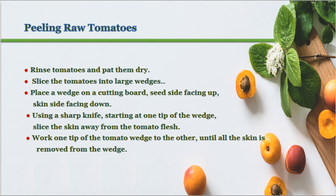Technique for peeling raw tomatoes: rinse tomatoes and pat them dry. Place a wedge on a cutting board, seed side facing up and skin side facing down. Using a sharp knife, starting at one tip of the wedge, slice the skin away from the tomato flesh, working from one tip of the tomato wedge to the other until all the skin is removed.